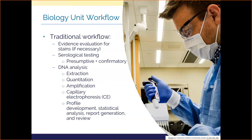Once we figure out the source of the stain and determine it's a human stain relevant to your case, we go through an exhaustive process where we pull the DNA from the cells, see how much we're working with, create multiple copies to build a rich profile, then review and clean it up on a computer, and statistically analyze it to determine the probability of that person's DNA profile being contributed by another random unrelated person.